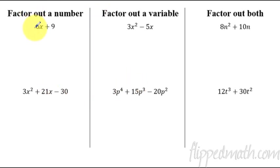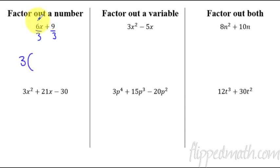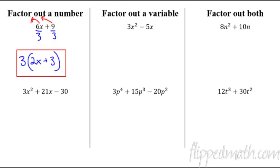First example: factoring out a number. To help visualize, we divide both terms by the largest possible number. The largest number that goes into both 6 and 9 is 3. So I divide by 3 and write 3 on the outside of the parentheses. 6 divided by 3 is 2, giving us 2x, and 9 divided by 3 is 3. So the answer is 3(2x + 3). To check, distribute the 3 back and you get 6x + 9 — correct.